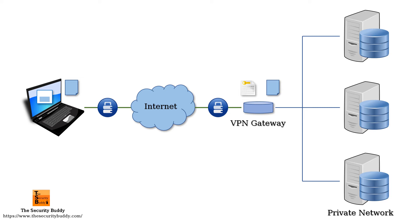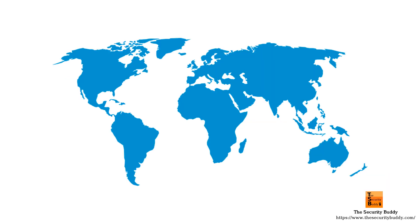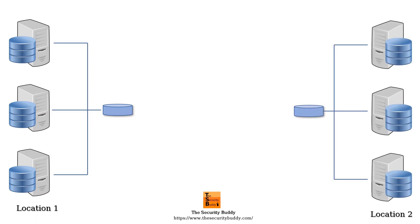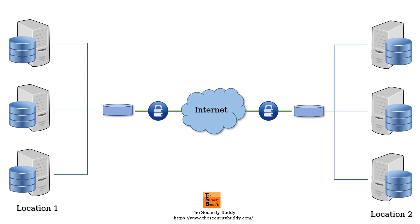Similarly, when the user receives any data, the user's device decrypts and reads the data. Site-to-Site VPN, on the other hand, is used to connect different LANs of an organization. For example, if the organization has different branch offices in different geographical locations using different local area networks, one VPN gateway from one LAN can communicate with the VPN gateway of another LAN. A VPN tunnel is created between the VPN gateways, and as a result, the VPN user does not need to install any client software on his device.